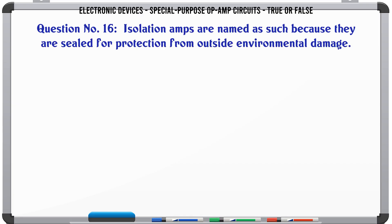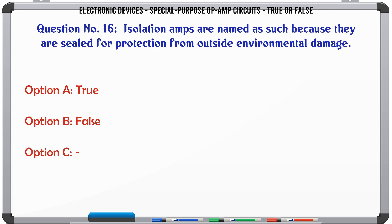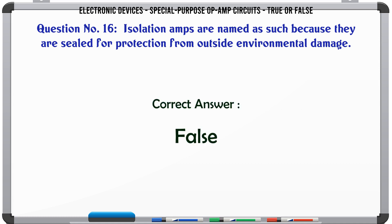Isolation amps are named as such because they are sealed for protection from outside environmental damage. A. True. B. False. C. D. The correct answer is False.